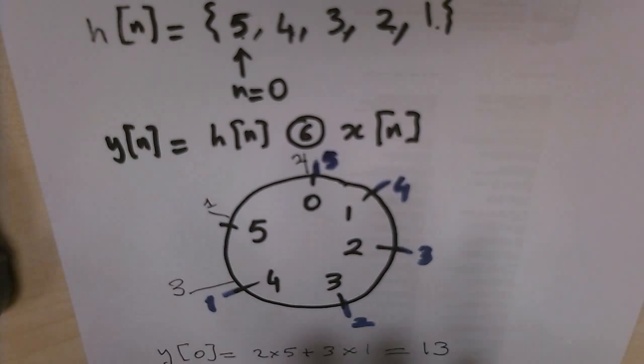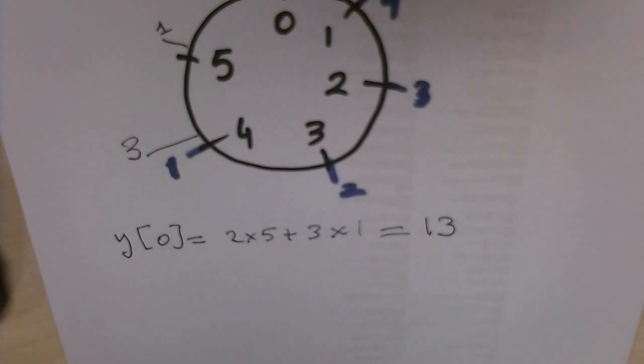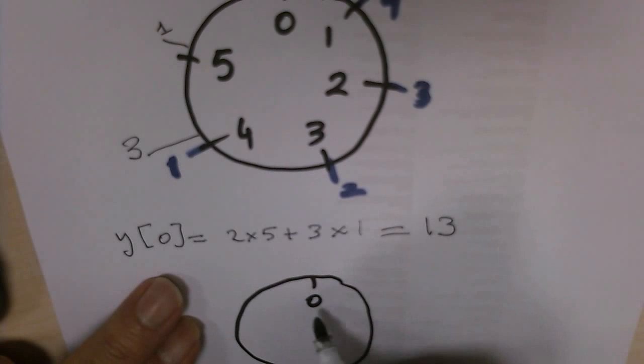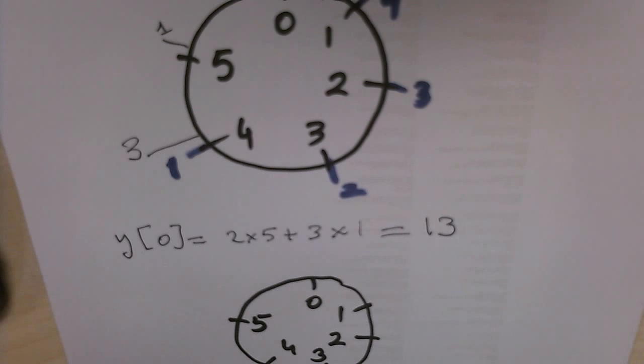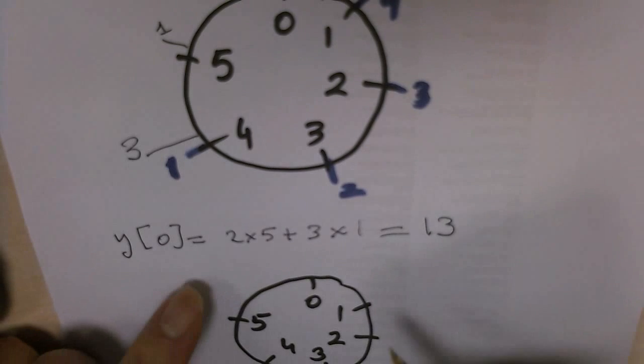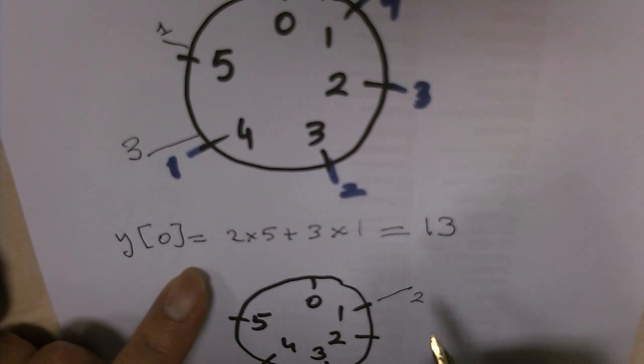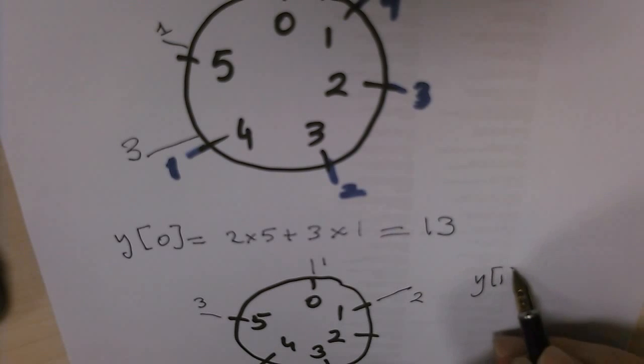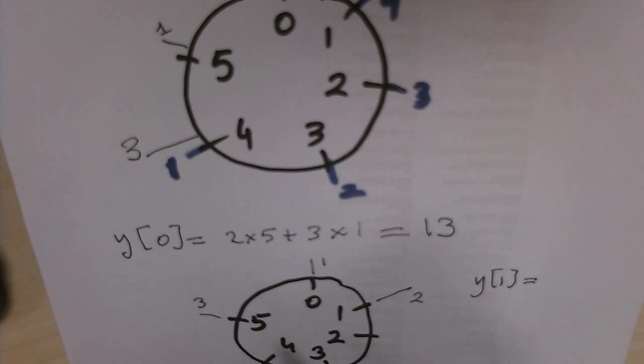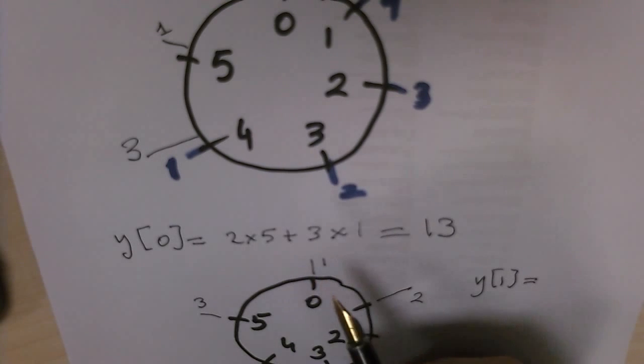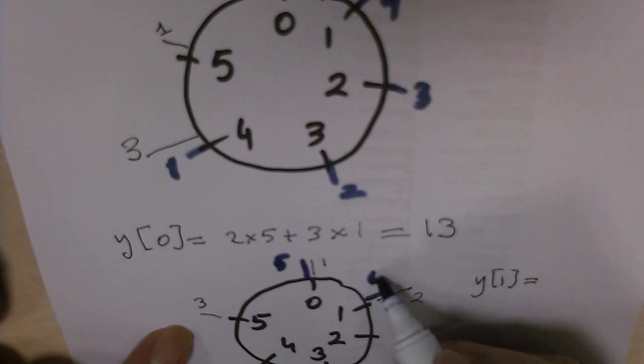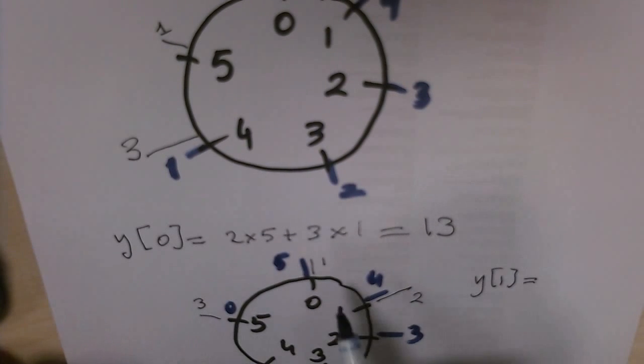Now for y[1] I shift the x one unit. So I'm going to draw another circle here: 0, 1, 2, 3, 4, 5. Now my x sequence moves one unit to the right: 2, 1, 3. And y[1] is now, here I have 5, 4, 3, here there is no overlap.